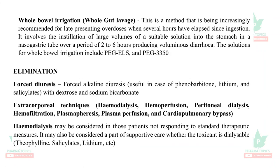Whole bowel irrigation (whole gut lavage) involves administration of PEG — polyethylene glycol ELS or polyethylene glycol 3350 — which produces voluminous diarrhea to remove the absorbed poison from the GIT. Elimination includes forced diuresis, forced alkaline diuresis (useful in phenobarbitone, lithium, and salicylate poisoning with dextrose and sodium bicarbonate). Extracorporeal techniques involve hemodialysis, hemoperfusion, peritoneal dialysis, hemofiltration, plasma pheresis, plasma perfusion, and cardiopulmonary bypass.